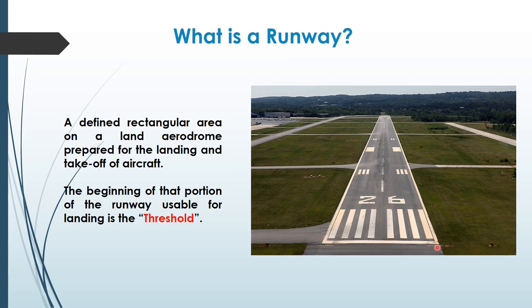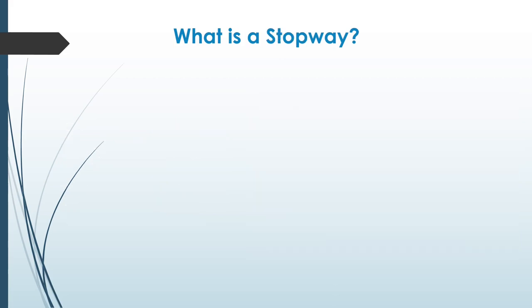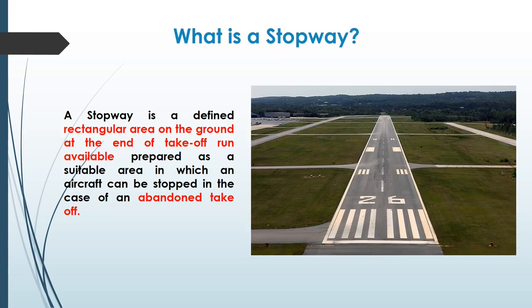So this becomes the threshold of runway 26. The next is the stopway. A stopway is a defined rectangular area on the ground, present at the end of takeoff run available, which is a declared distance we will discuss further. It is prepared as a suitable area in which an aircraft can be stopped in case of an abandoned takeoff. This abandoned takeoff can be because of various reasons like technical failure, engine failure, fire, or various environmental conditions.